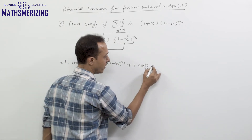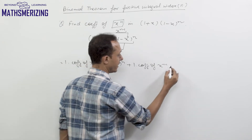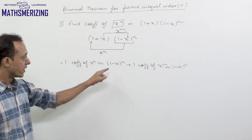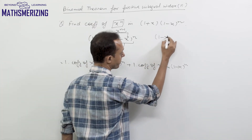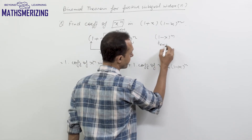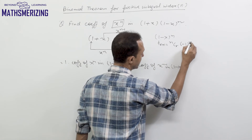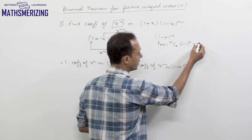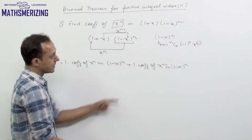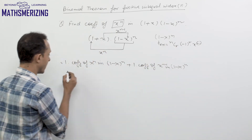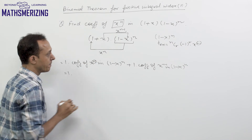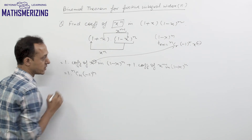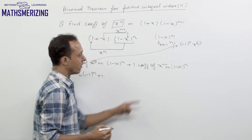For (1-x)^n, the general term is nCr times (-1)^r times x^r. For the coefficient of x^n, I put r = n, so the coefficient is nCn times (-1)^n. I write 1 times nCn times (-1)^n for the first part.